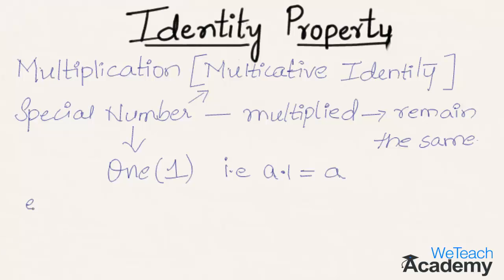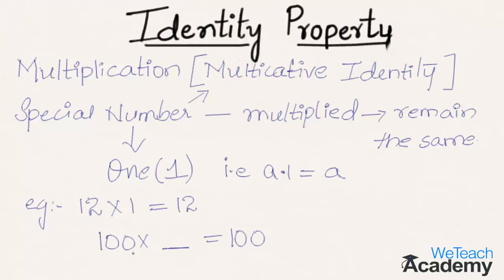For example, 12 multiplied by the multiplicative identity, that is 1, gives the result 12. Similarly, 100 should be multiplied with a number so that we get the product as 100. That number will be the multiplicative identity, that is 1. So 100 × 1 = 100.